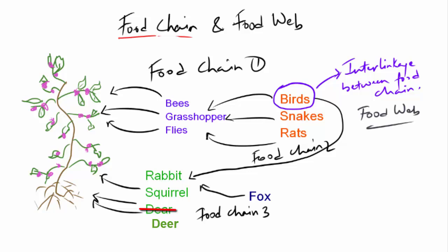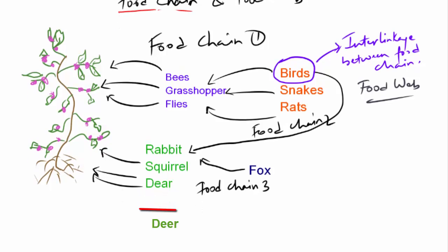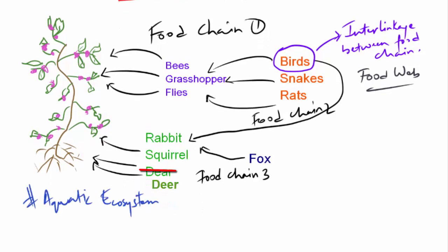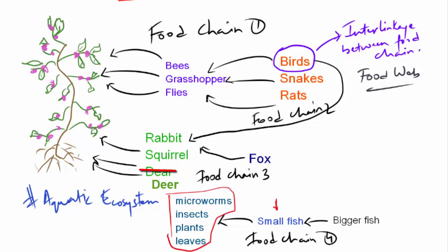This kind of interlinkage also happens between two different ecosystems. Let's take an example of an aquatic ecosystem. Fish eat micro worms, insects, plants, and leaves. Then small fish get eaten by bigger fish — and like this the chain continues. This is another form of food chain in an aquatic ecosystem. There is an interaction between these two food chains, as fish eat insects, flies, leaves, and flowers — and these insects and flies are also part of the terrestrial ecosystem, where they have their own food chain.